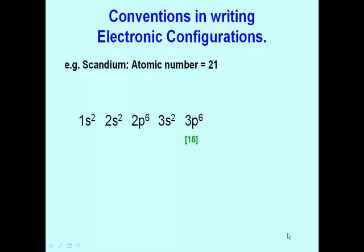Now remember, according to the Aufbau principle, after we fill the 3p orbitals, we then fill the 4s, followed by the 3d. And so here we have written the electronic configuration of scandium.